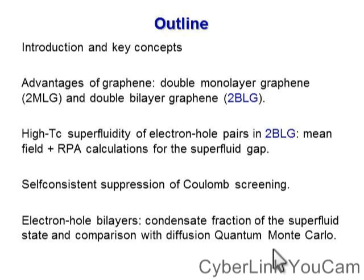The following topic will be to understand in detail the self-consistent suppression of electron-hole Coulomb screening, which usually is considered a very detrimental effect in suppressing superfluidity. Finally, I'm going to present very recent work in our group regarding electron-hole bilayers in general. Very recently, from the Cambridge group of Richard Needs and collaborators, it has been possible to obtain the condensate fraction at T equals zero of the superfluid state by means of diffusion quantum Monte Carlo simulation. The quantum Monte Carlo data will then be compared quantitatively with our predictions obtained by mean field calculations to check the validity of our approximations.